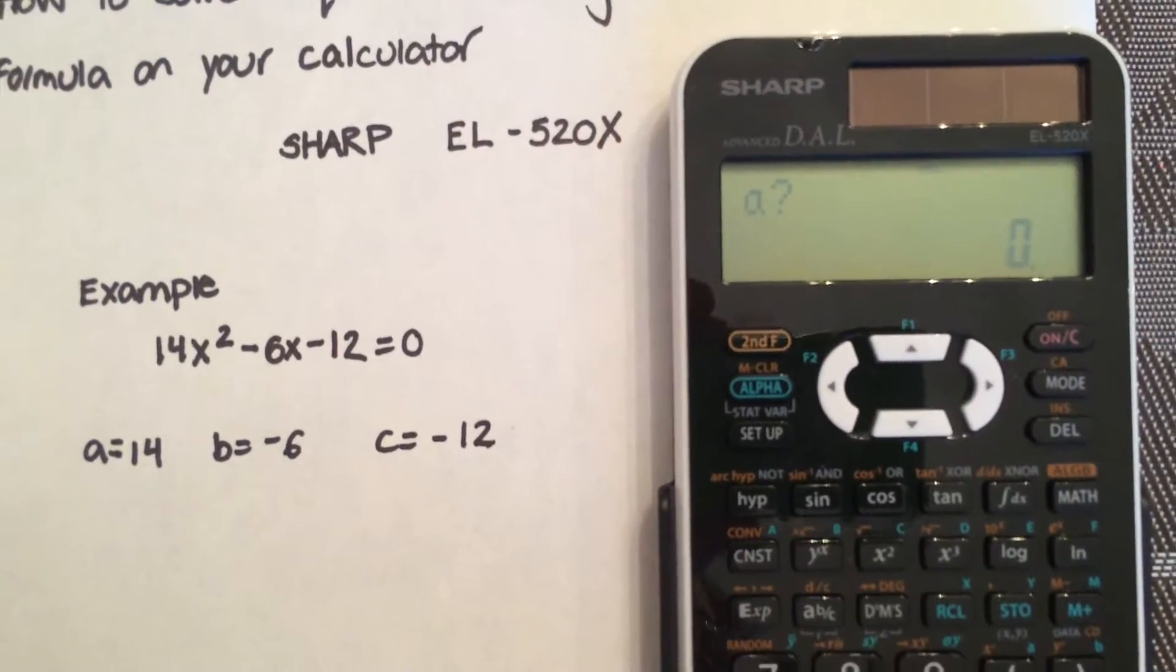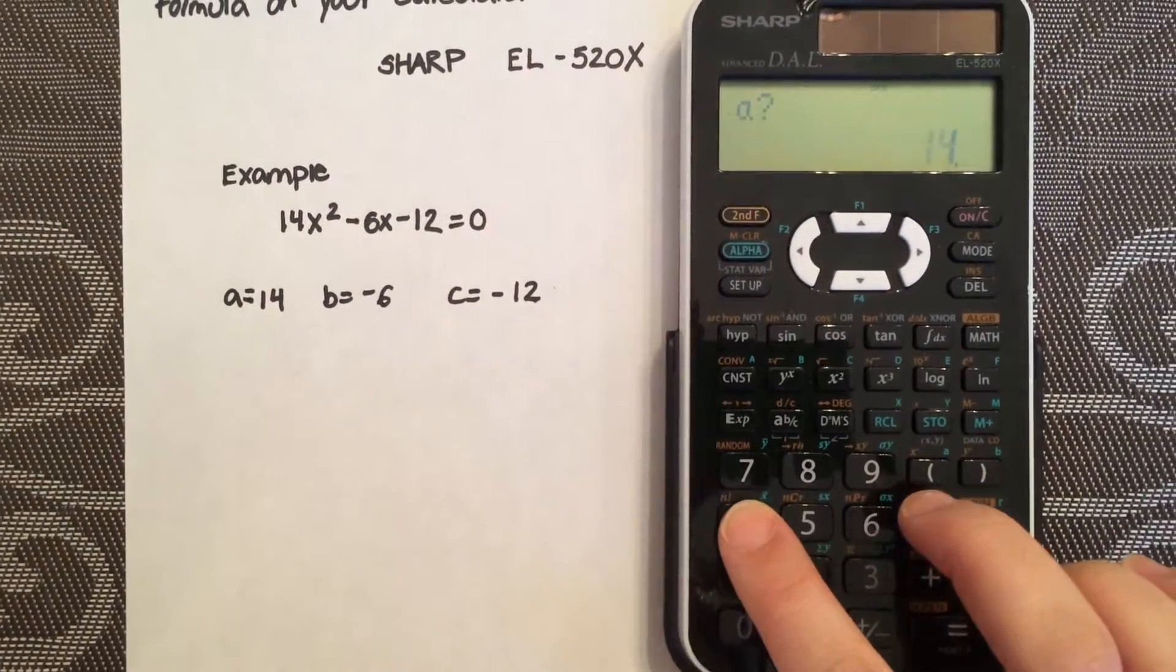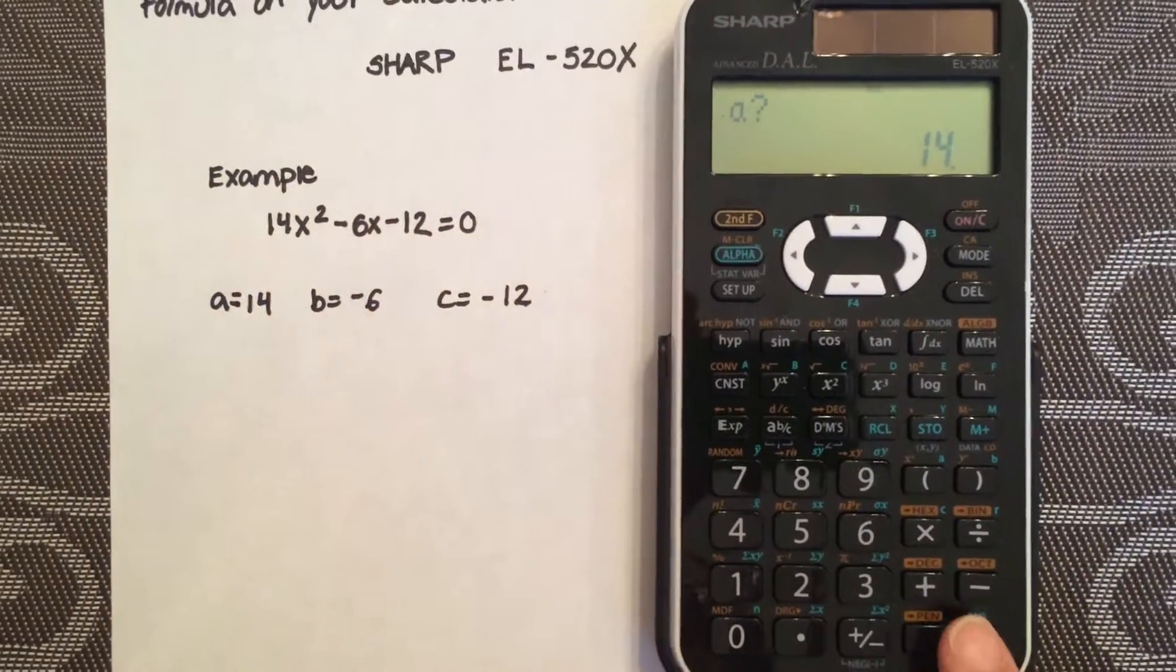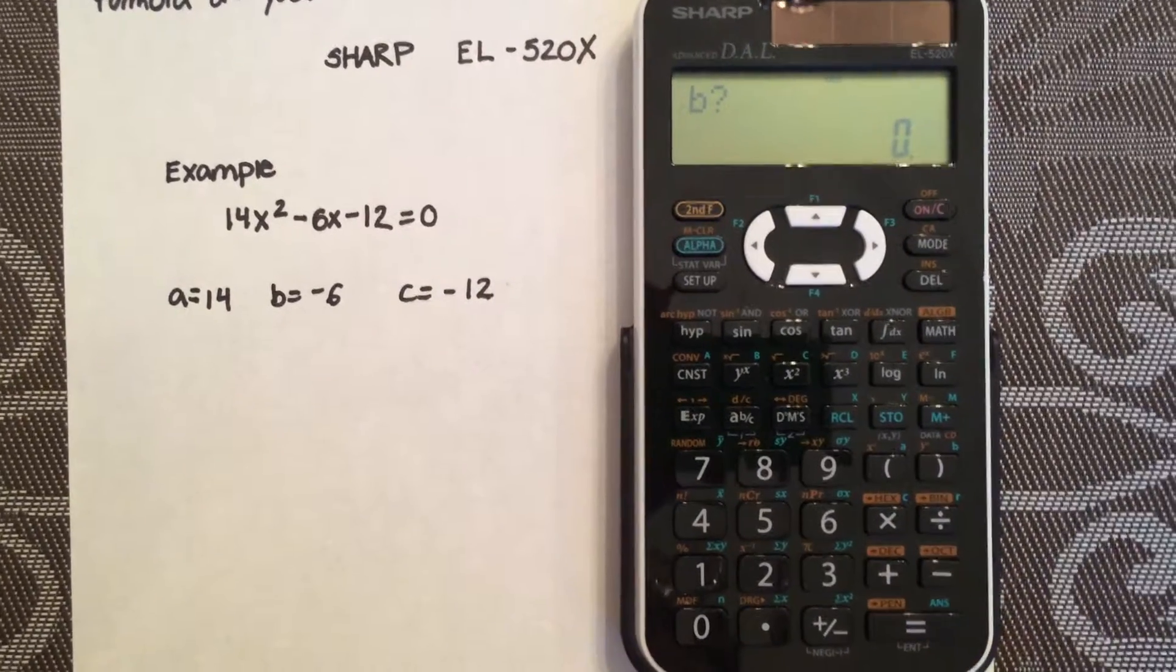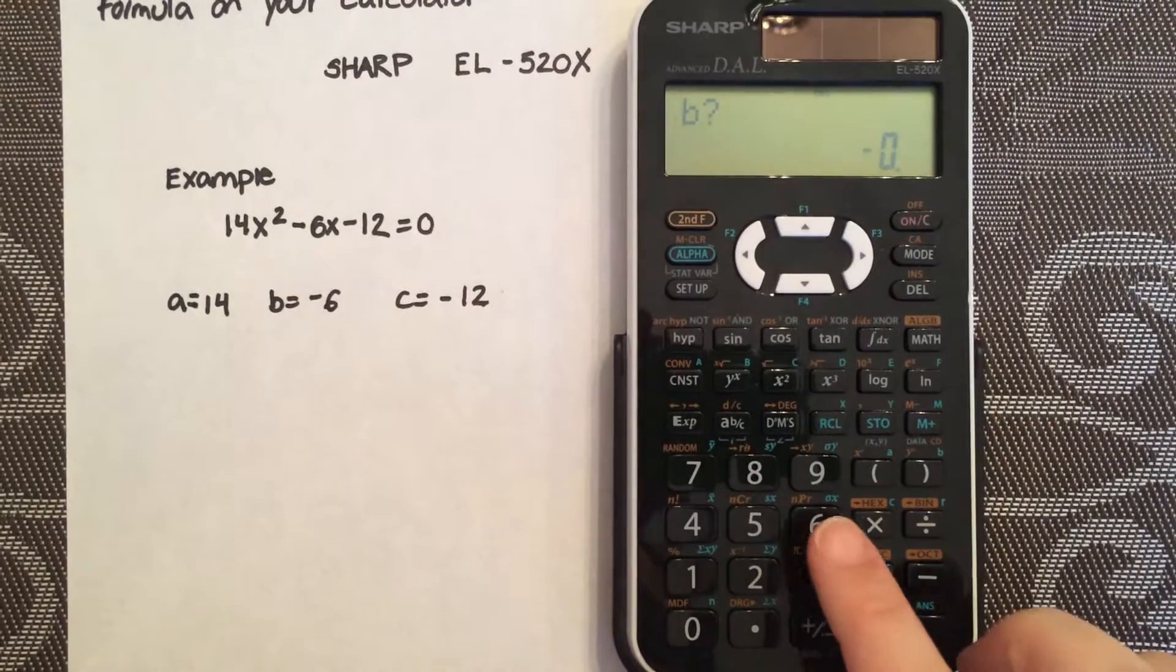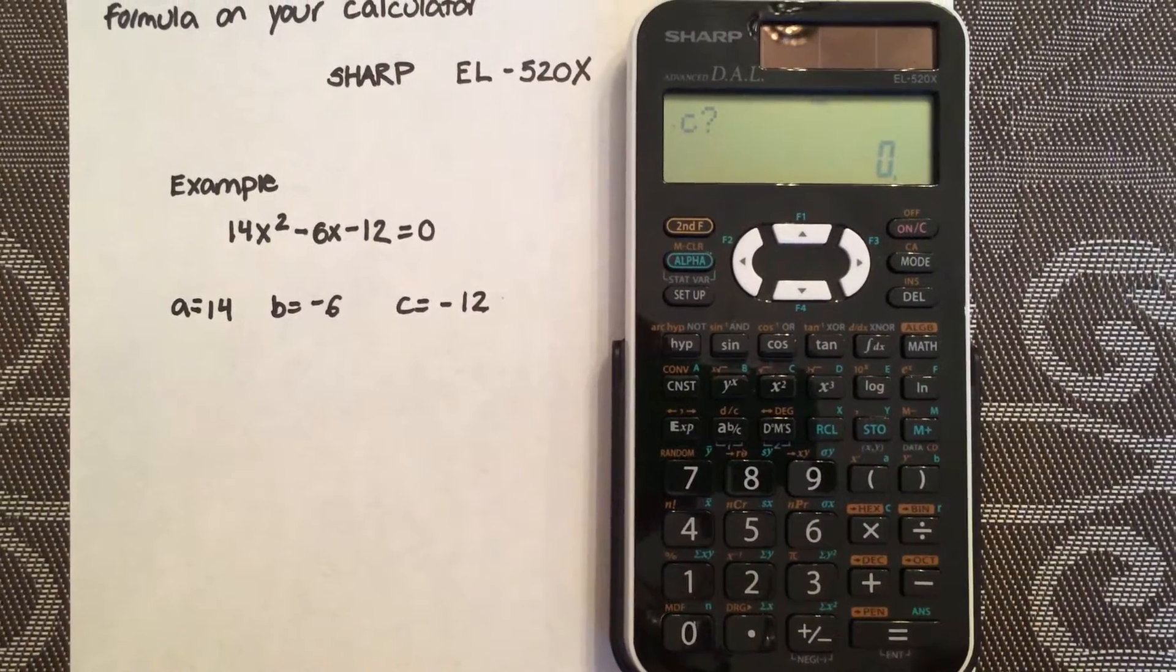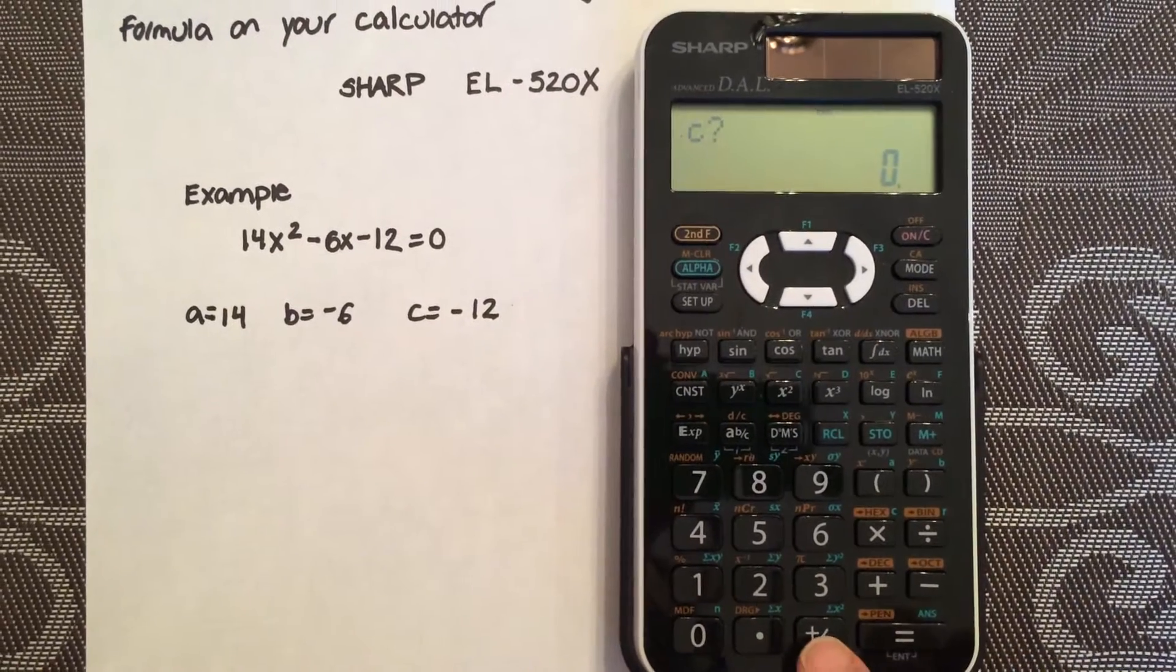Now you should see it's prompting you for an A value. So enter 14, as per here. B, enter -6, equals. And C, enter -12.